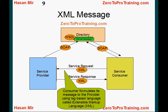Now, let's talk about XML. The service consumer software will formulate its message that needs to be sent to the provider software based on the service description. The consumer software will first query the directory to find out which services are available and how to communicate with the provider. Based on the description written in WSDL language, an XML message will be formed. This message that the consumer sends to the provider will be written in XML — extensible markup language — which is an industry standard used between two software to communicate with each other.